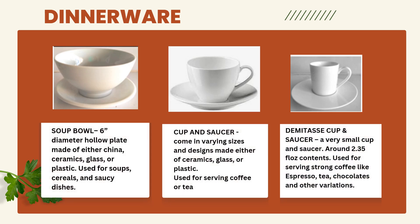The soup bowl is a 6-inch diameter hollow plate made of china, ceramics, glass, or plastic, used for soups, cereals, and saucy dishes. The cup and saucer comes in varying sizes and designs made of ceramics, glass, or plastic, used for serving coffee or tea. The demitasse cup and saucer is a very small cup and saucer of around 2.35 ounces, used for serving strong coffee like espresso, tea, chocolates, and other variations.